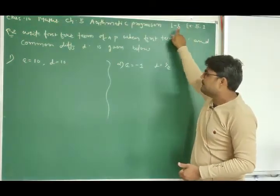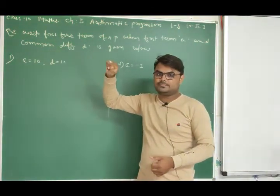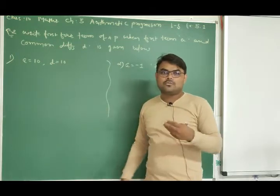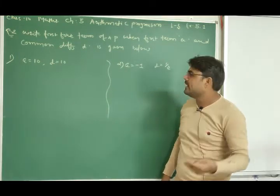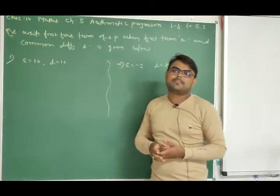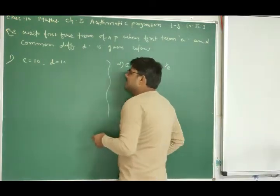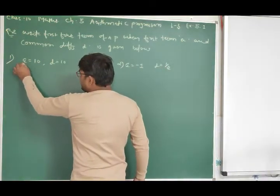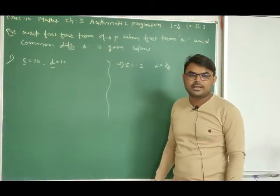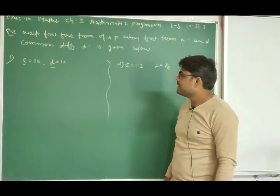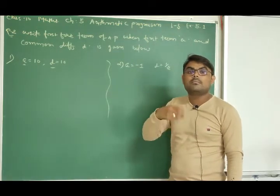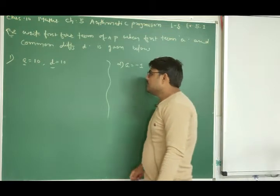In exercise 5.1, question number 2, we have to find 4 more terms when the first term and common difference are given. In Arithmetic Progression, the first term is denoted by A and the common difference is denoted by D — that we already know. But we still have to find 4 more terms.